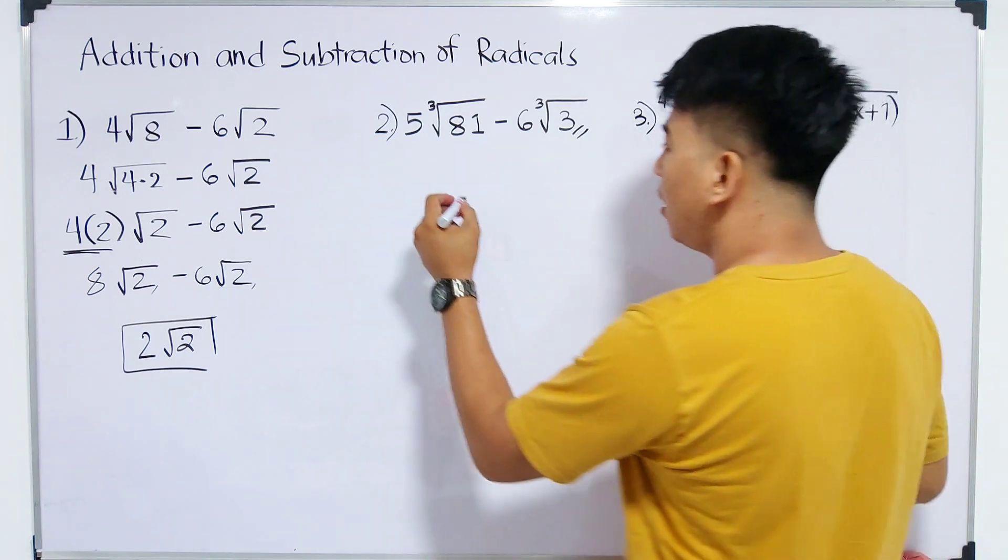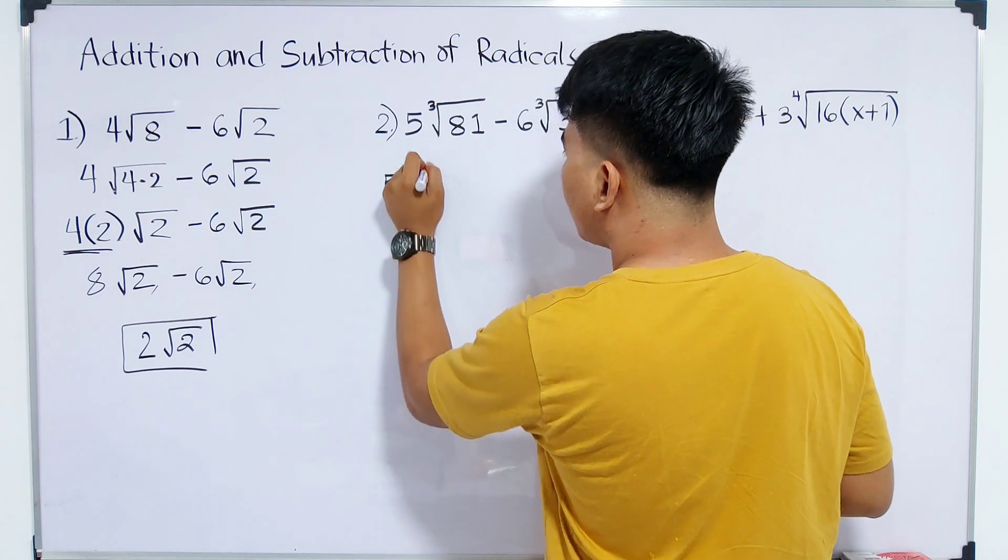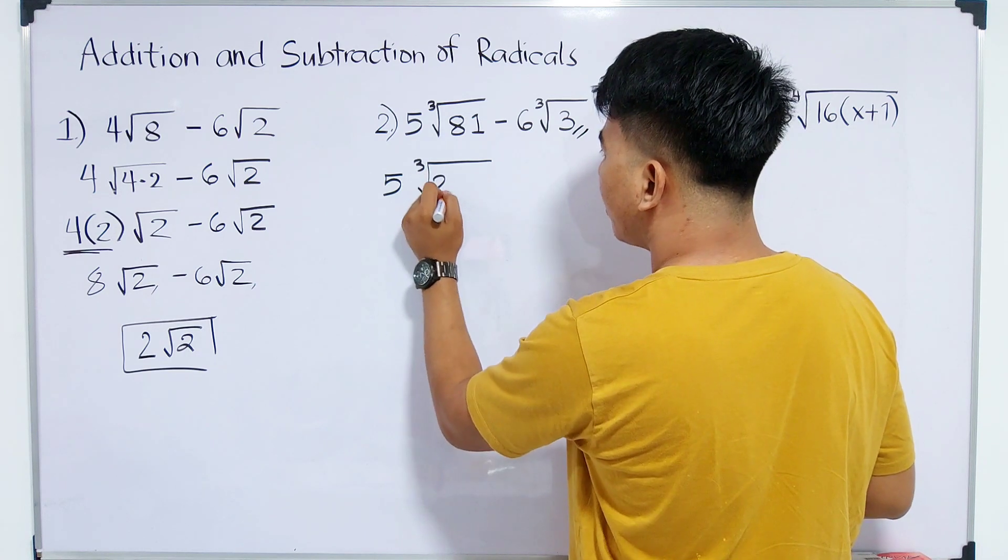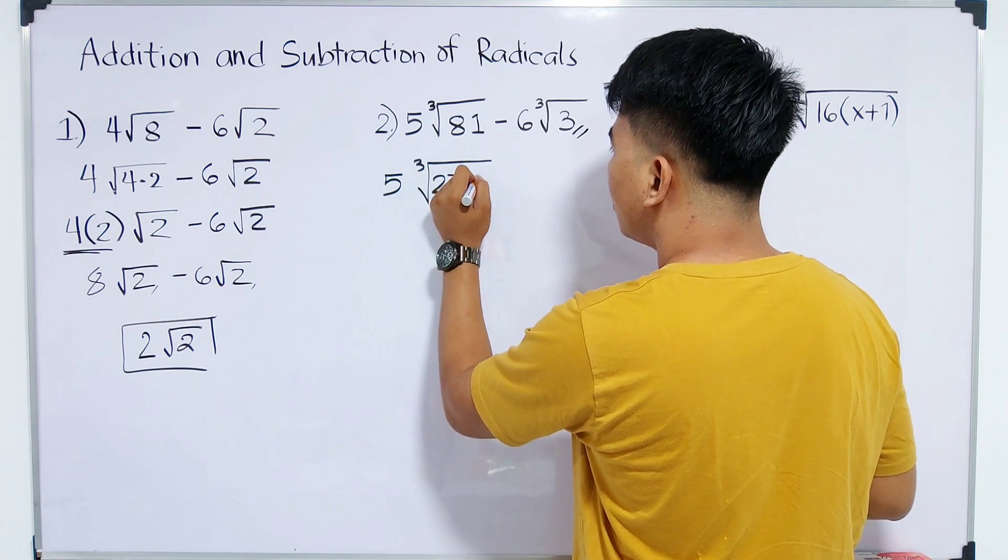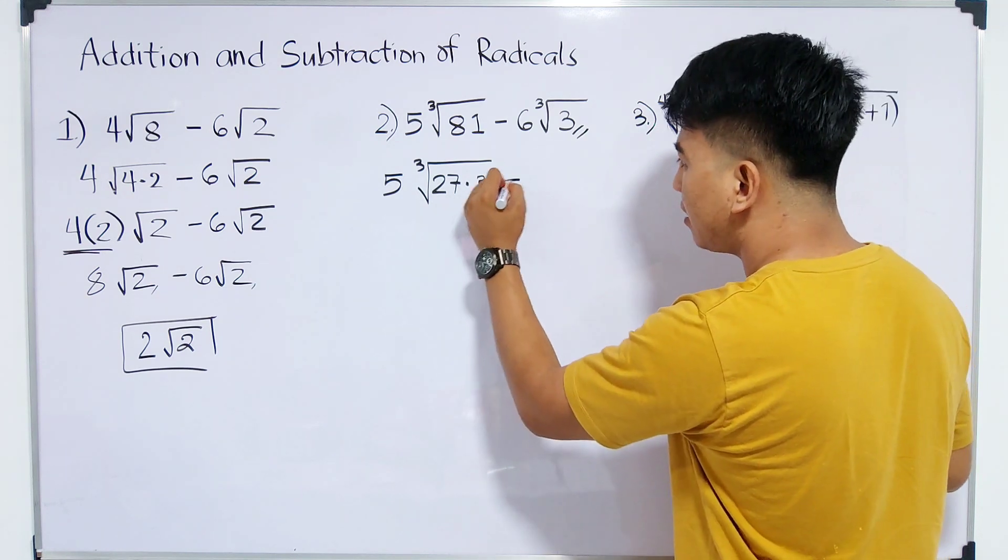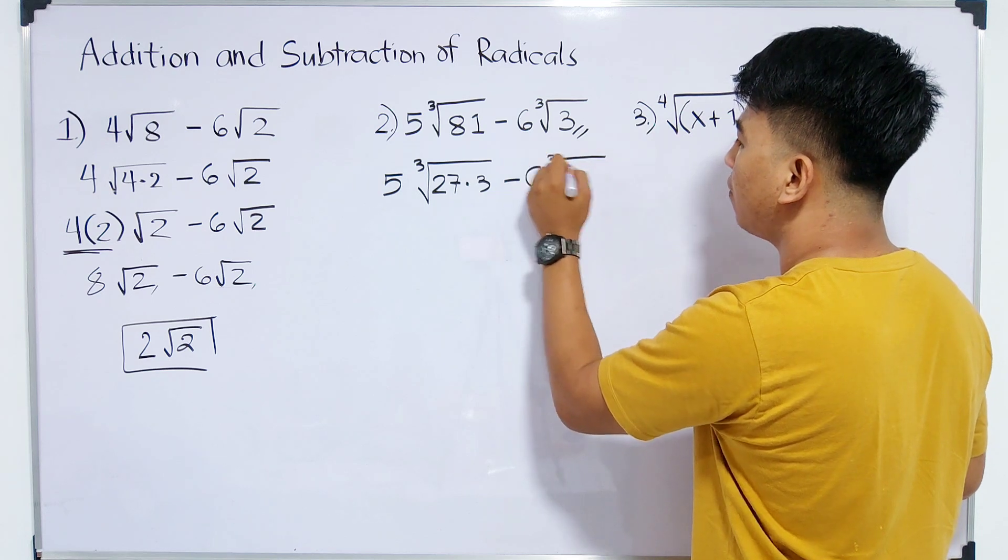So perfect, we will factor out 81. So we have 5 times the cube root of 81, which becomes 27 times 3. This is it, guys. 27 is a perfect cube. Minus 6 times the cube root of 3.